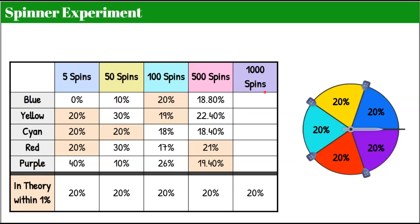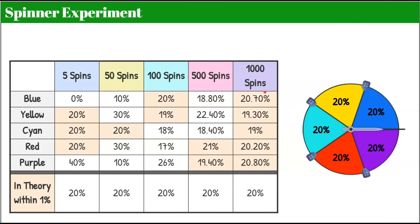Let's do one more and do 1,000 spins. After 1,000 spins, all five of my probabilities were the expected outcome of the theoretical probability, all within 1% — just a little over, a little under, one under, 0.2 over, and 0.8 over. So you can see that the more spins you do, your experimental probability is more likely to match your theoretical probability.